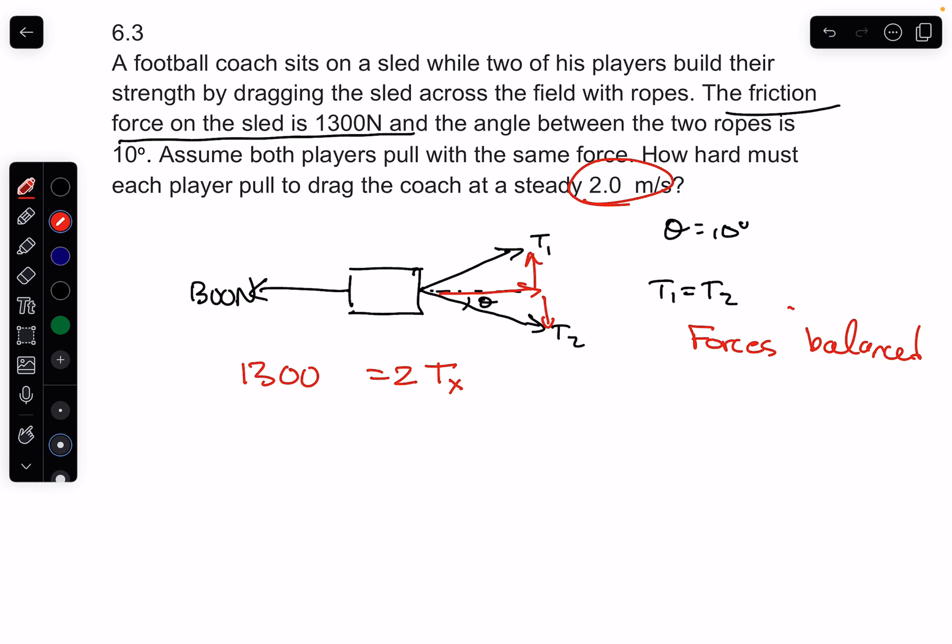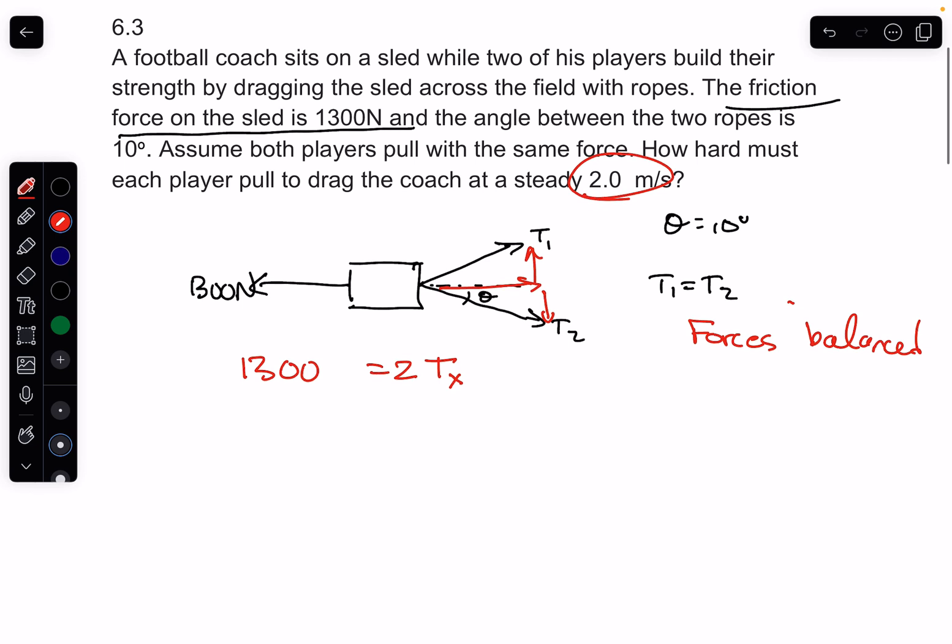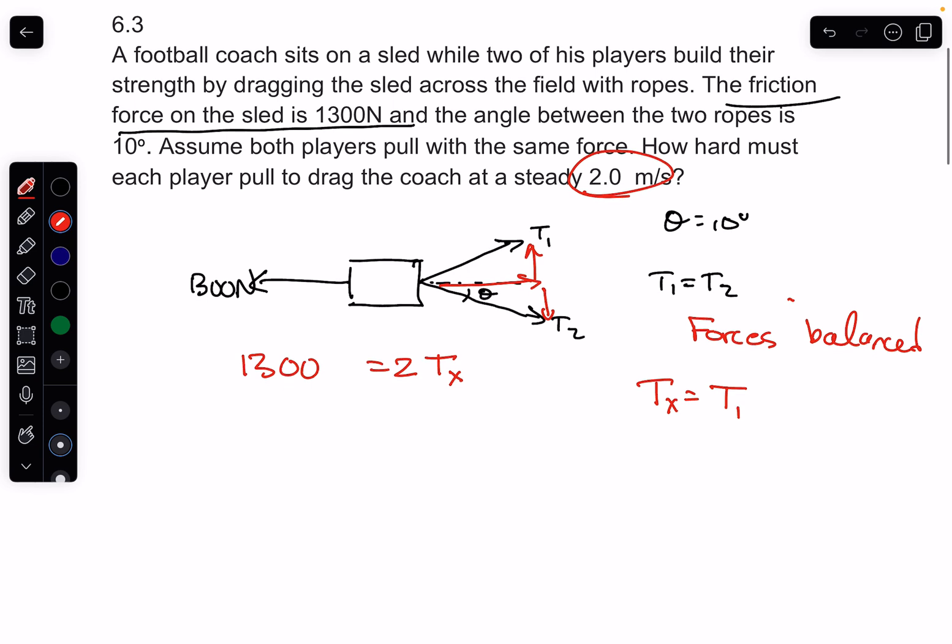I need to find T1x, and T1x would be equal to—so Tx is equal to the tension in one of the ropes. You can call it T1 if you will, but T1 is T2, so it makes no difference. T1, and that'll be cosine of theta.